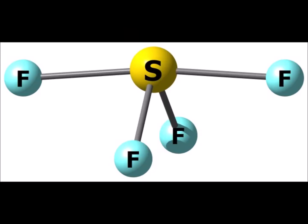This gives us the so-called seesaw structure, which is like a trigonal bipyramid but one of the equatorial positions has been replaced by a lone pair. Note that if we change the central atom and the halogen atoms, we get a more or less distorted version of a seesaw. Since there are 5 electron domains, this gives us dsp3 hybridization on the central sulfur atom: d plus s plus 3 p's gives us 5 orbitals, corresponding to the 5 electron domains.